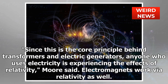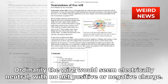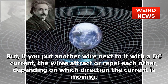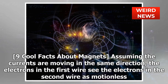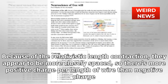Electromagnets work via relativity as well. When a direct current (DC) of electric charge flows through a wire, electrons are drifting through the material. Ordinarily the wire would seem electrically neutral, with no net positive or negative charge — a consequence of having about the same number of protons and electrons. But if you put another wire next to it with a DC current, the wires attract or repel each other depending on which direction the current is moving. Assuming the currents move in the same direction, the electrons in the first wire see the electrons in the second wire as motionless. Meanwhile, from the electrons' perspective, the protons in both wires look like they are moving, and because of relativistic length contraction they appear more closely spaced, so there is more positive charge per length of wire.